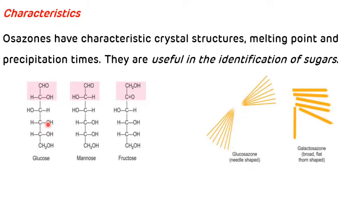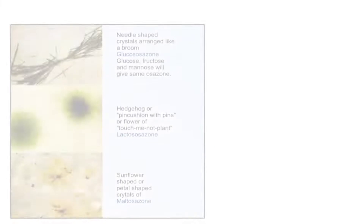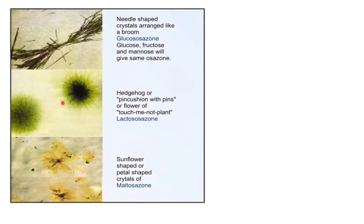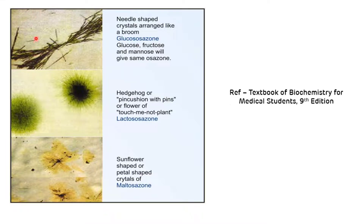Galactose differs from glucose in the structure at the fourth carbon, so galactose will form broad flat throne-shaped crystals. Lactose will form touch-me-not plant or powder-shaped crystals, and maltose will form sunflower-shaped crystals. To summarize: glucose forms needle-shaped or broom-shaped crystals, lactose forms touch-me-not plant-shaped crystals, and maltose forms sunflower-shaped crystals.